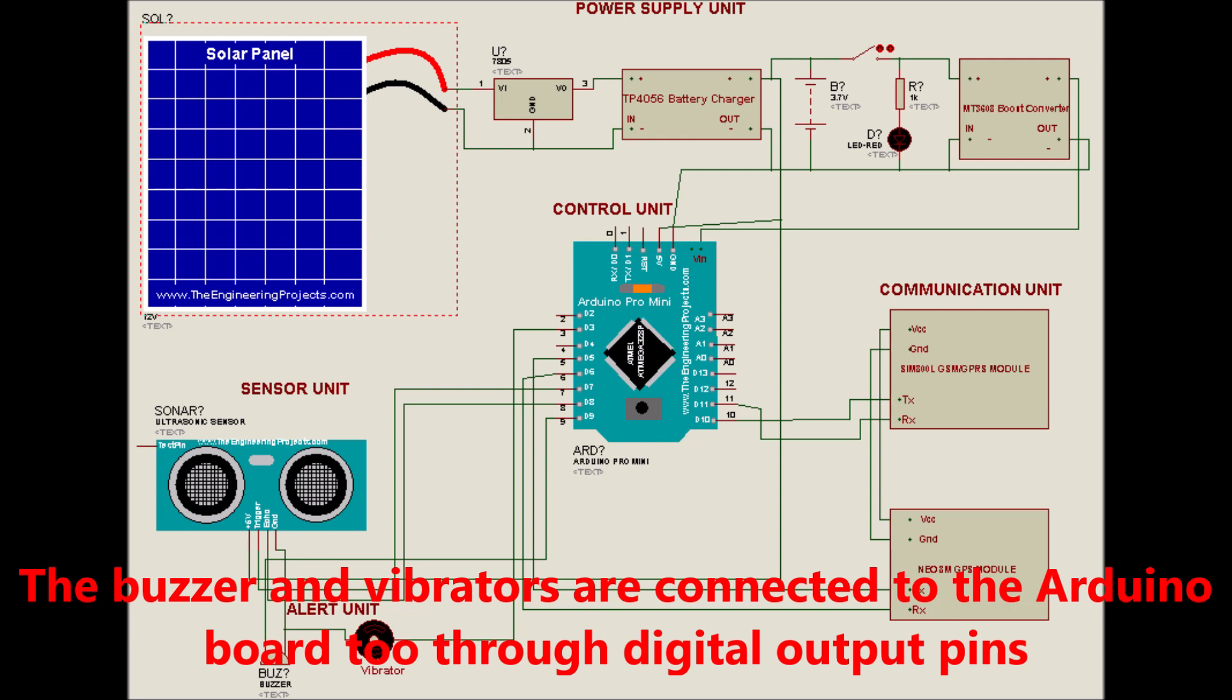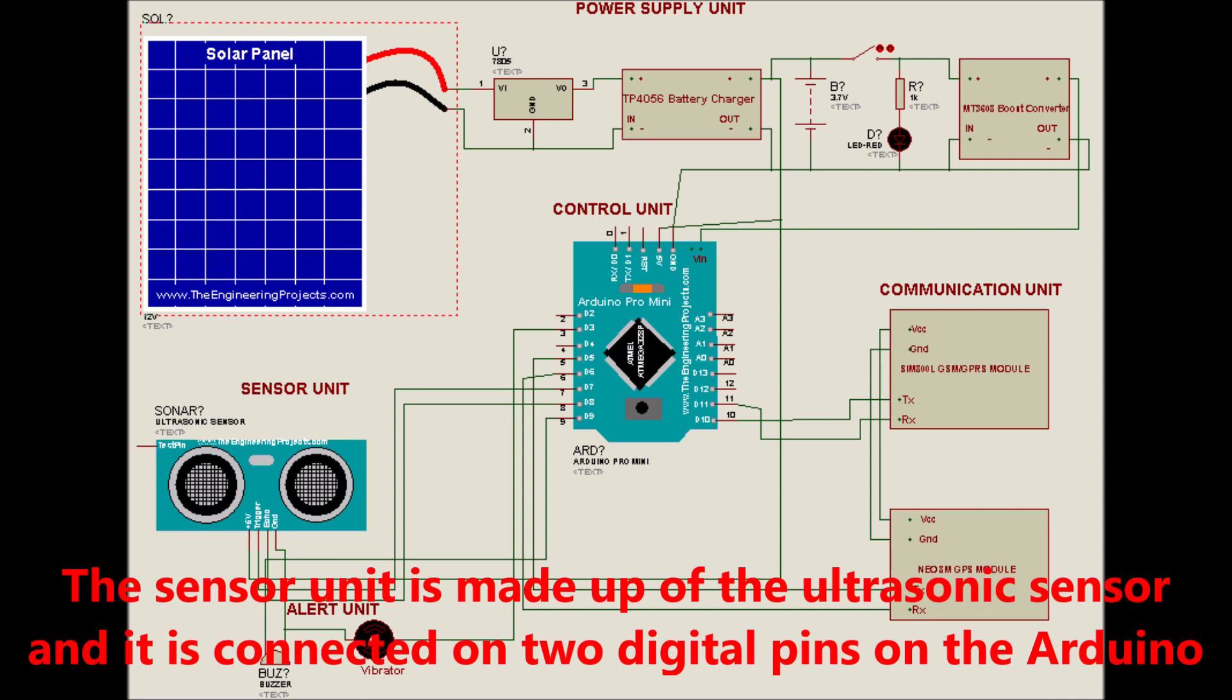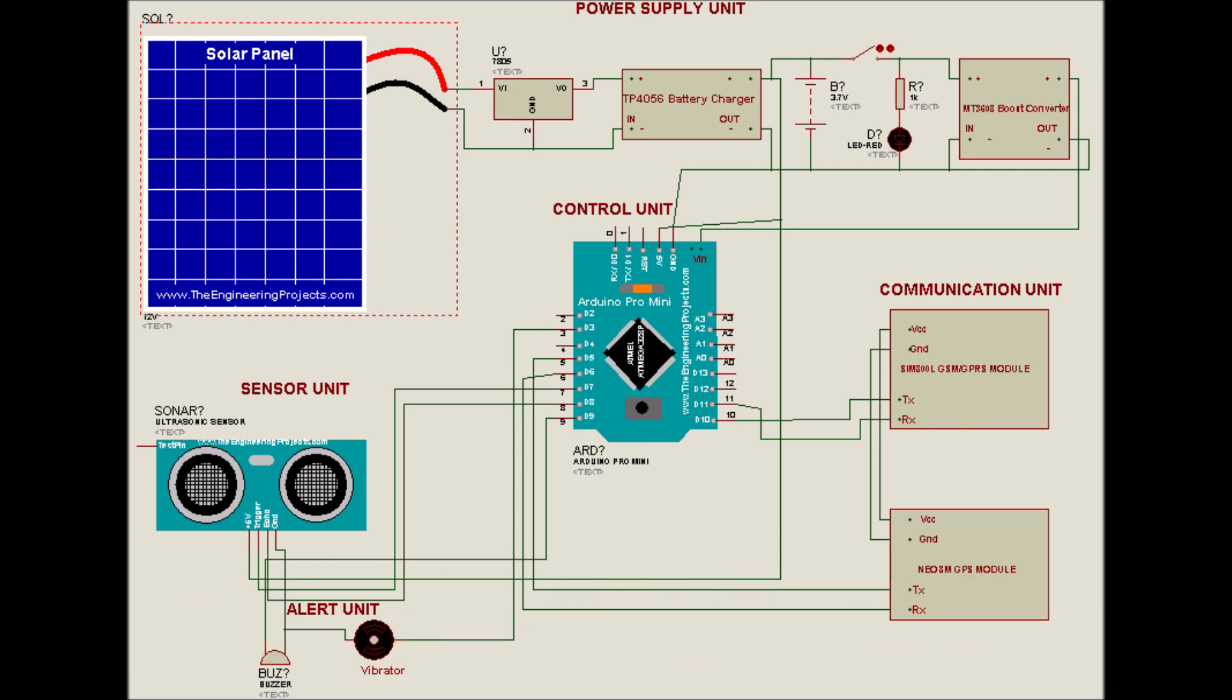The rest of the actuators like the buzzer and vibrator are connected as digital outputs on the Arduino. Both the GPS module and the GSM module use software serial communication protocol to send and receive signals to and from the Arduino Pro Mini Board, whereas the ultrasonic sensor uses two digital pins to talk to the Arduino.